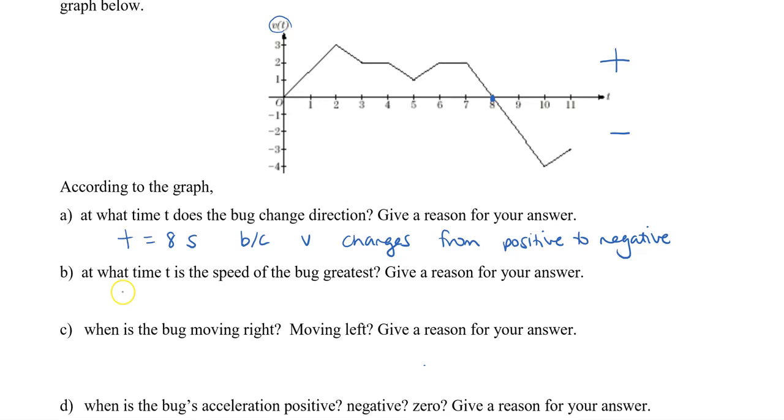Question b, at what time t is the speed of the bug the greatest? Now, speed doesn't take into account direction, so it doesn't have a negative sign. We can see that on the positive side, the greatest speed is at 2 seconds, which is 3 meters per second.